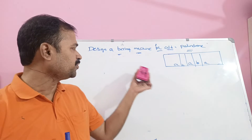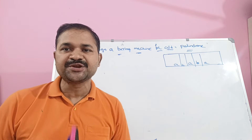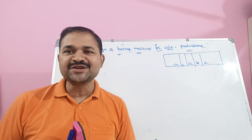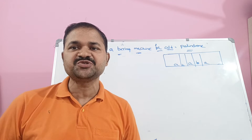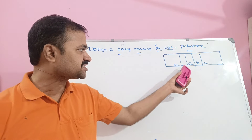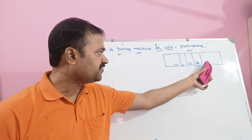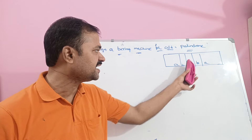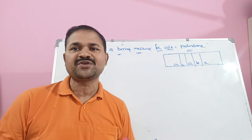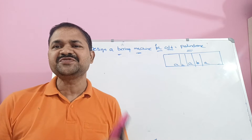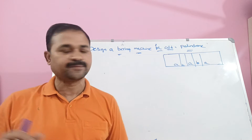Let's see this example: design a Turing machine for a palindrome. We know what a palindrome string is — the reverse of a string is equal to the given string. Here the string is ABABA. If you reverse ABABA, you get ABABA only, so this is an example of a palindrome string. Likewise we can take any number of strings, but the length of the string must be odd.